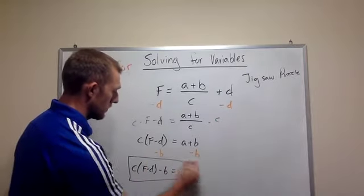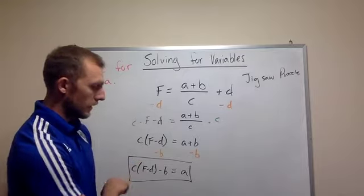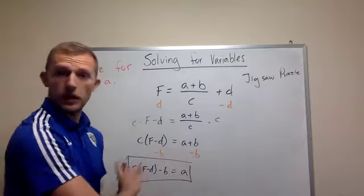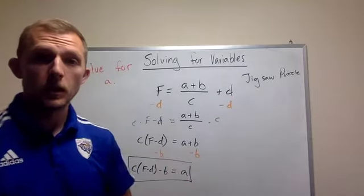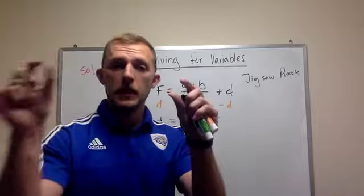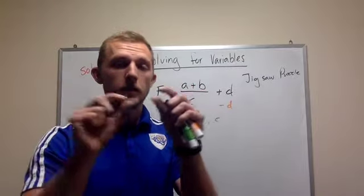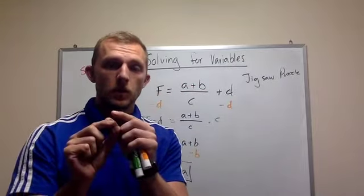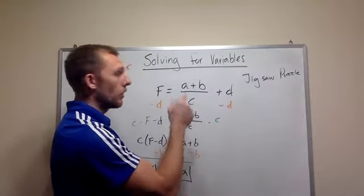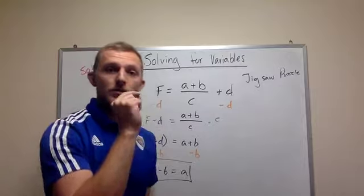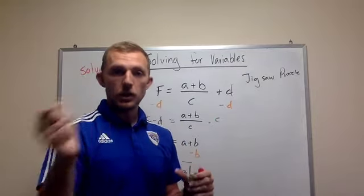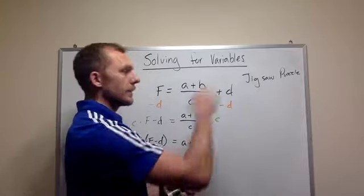Now you could distribute this and then go ahead and write the full answer. But that's good enough as is. This is just like a jigsaw puzzle. You're trying to take a piece out at a time so that you can get down to the very bare minimum. So remember, always look for the one part that is the most outlying variable or number, and then continue on.